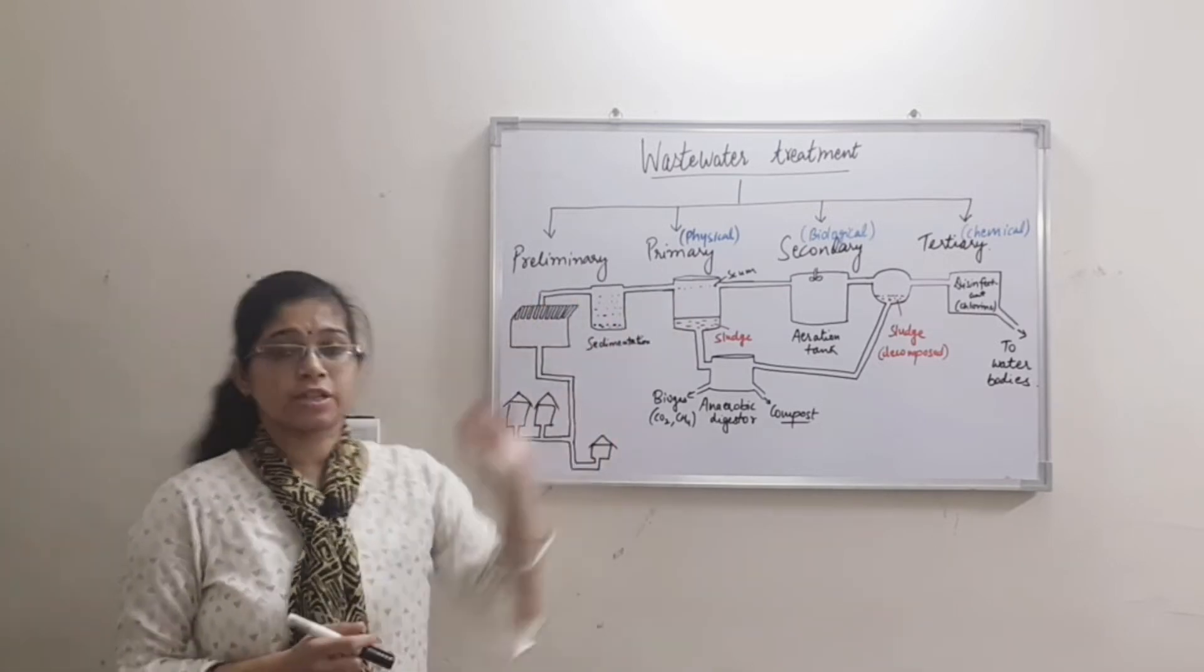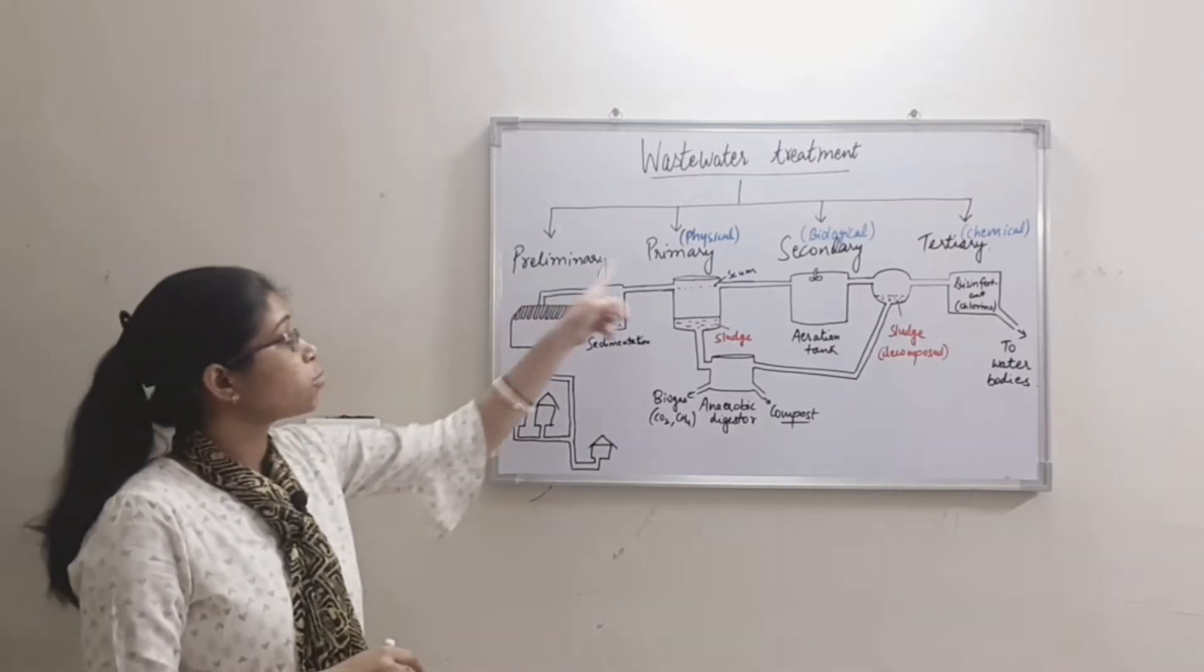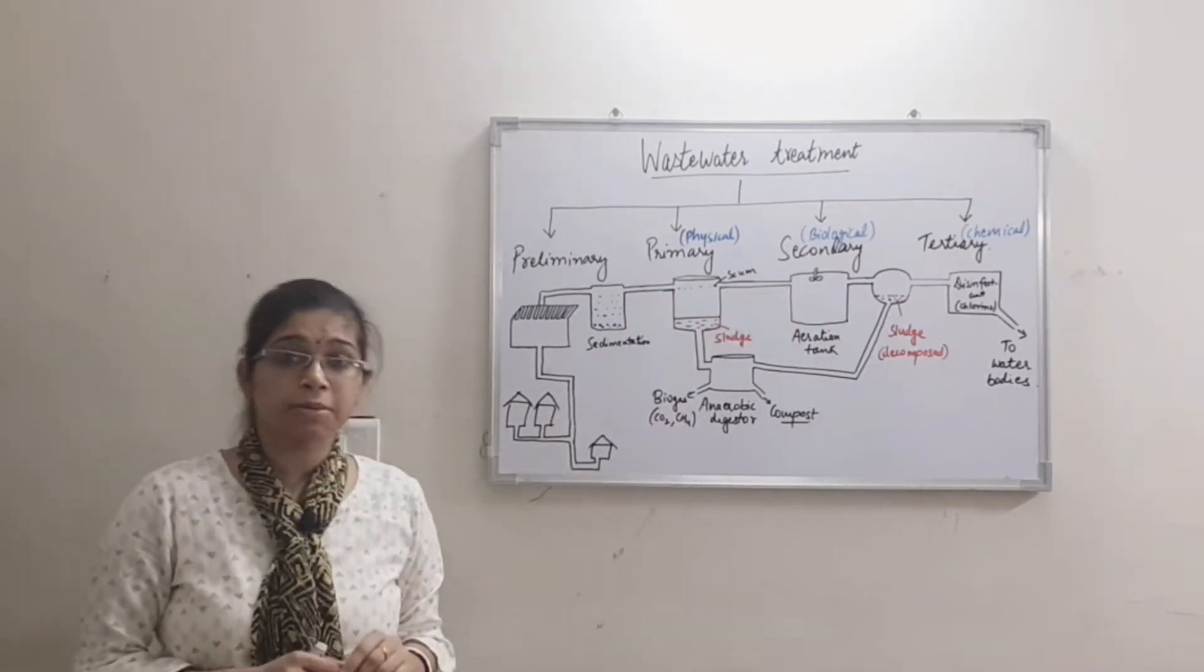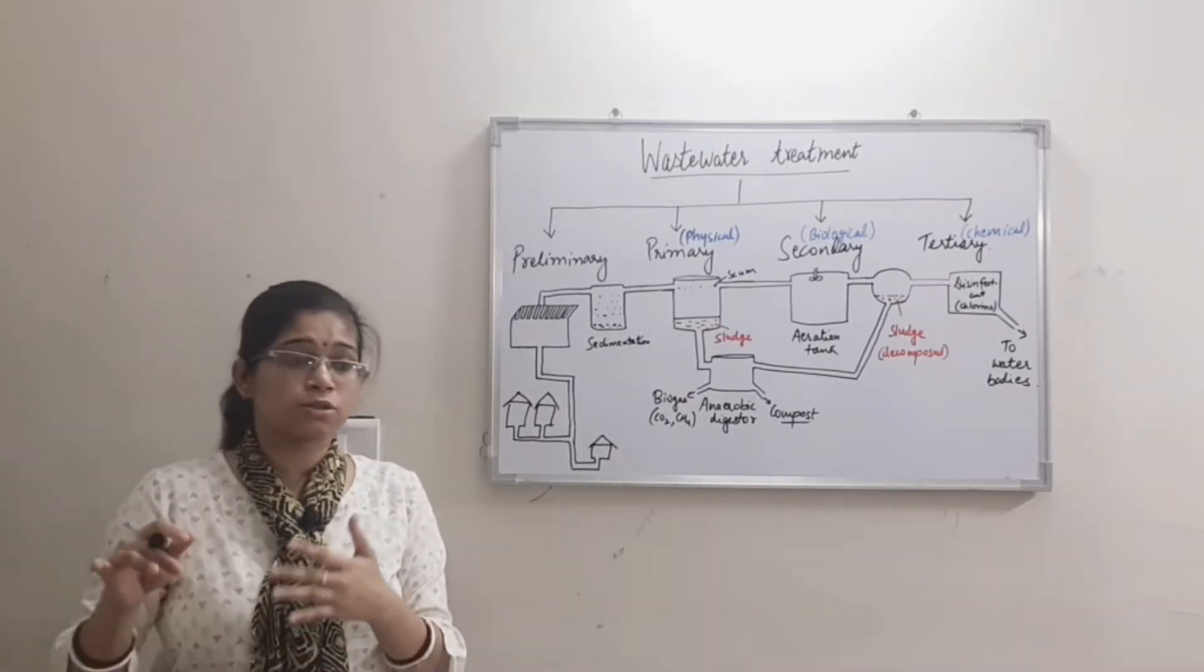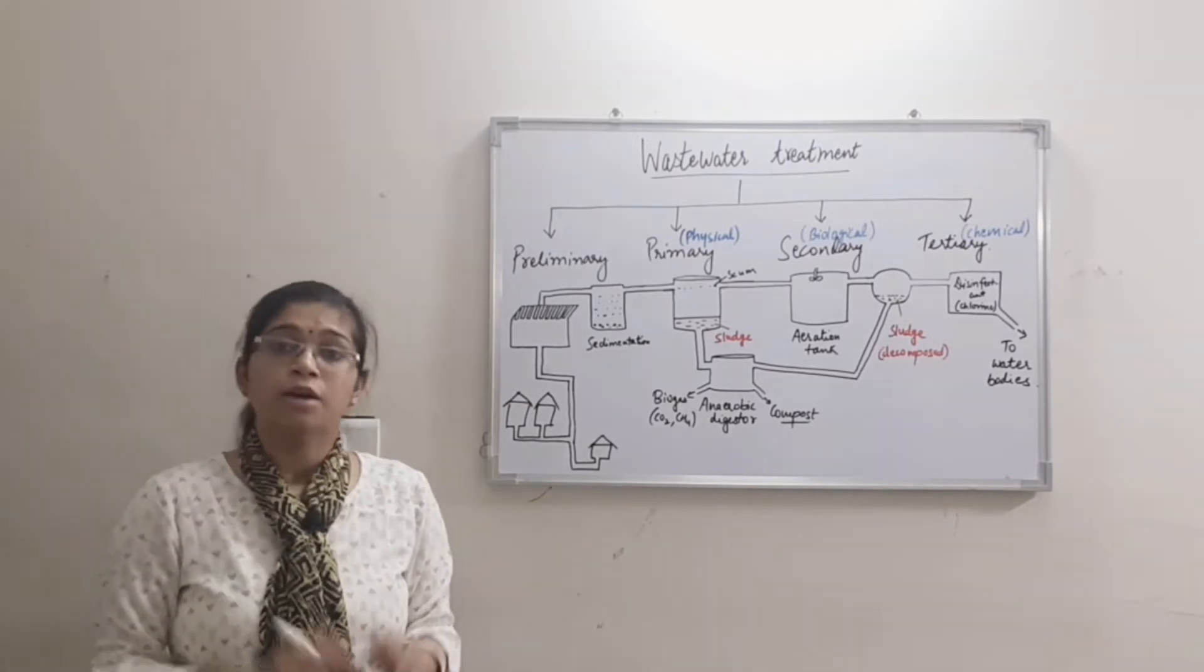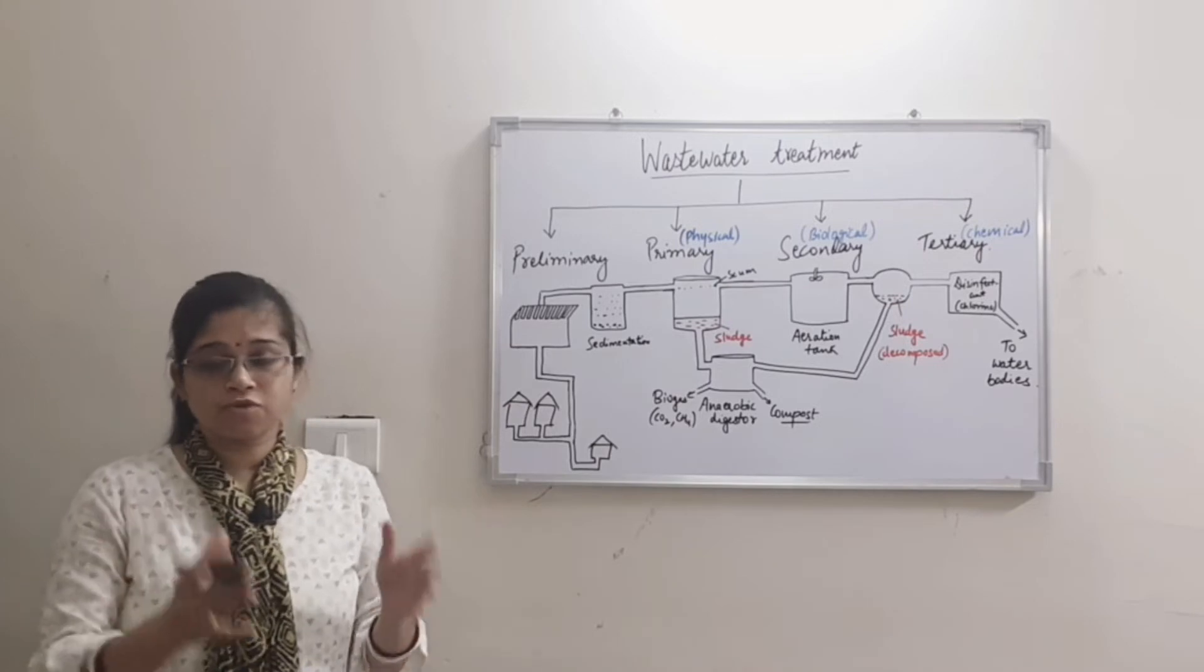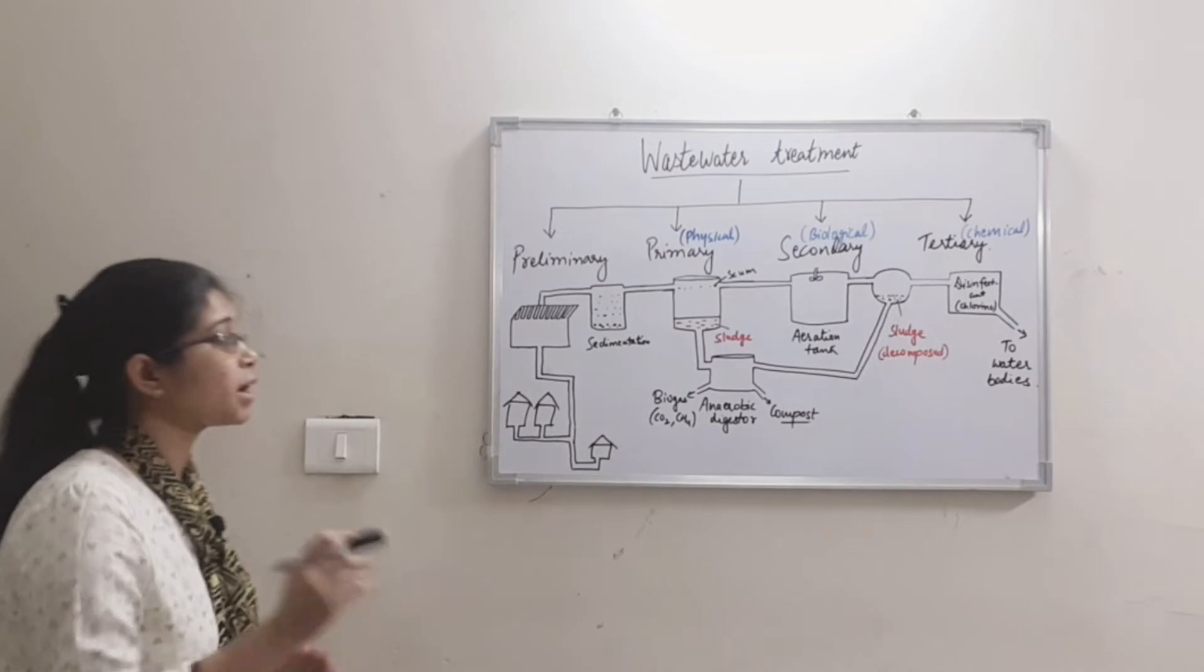After reaching the plant, there are 4 phases: preliminary, primary, secondary and tertiary. Preliminary involves physical removal of large objects. Primary is sedimentation. Secondary is biological treatment using microorganisms. Tertiary uses chemicals to clean the waste water.